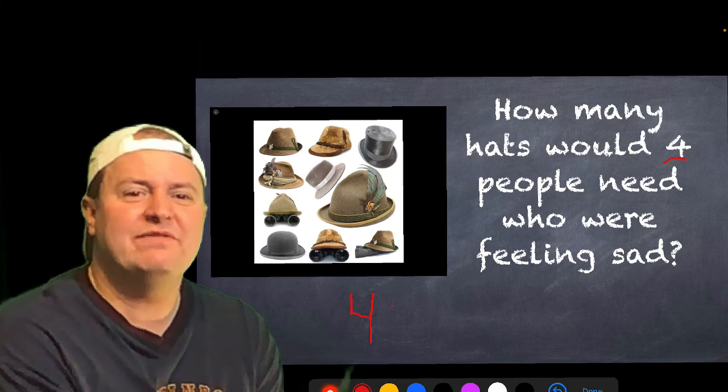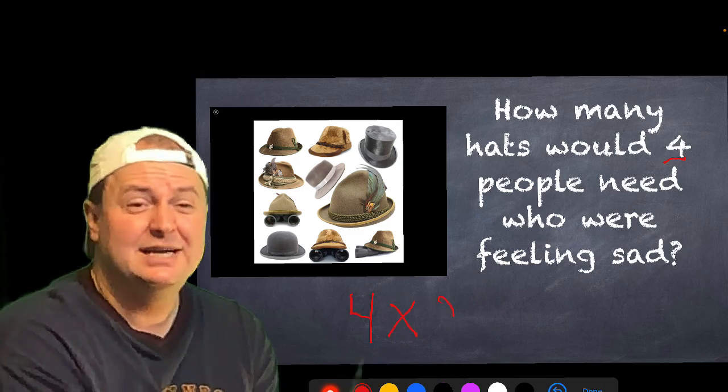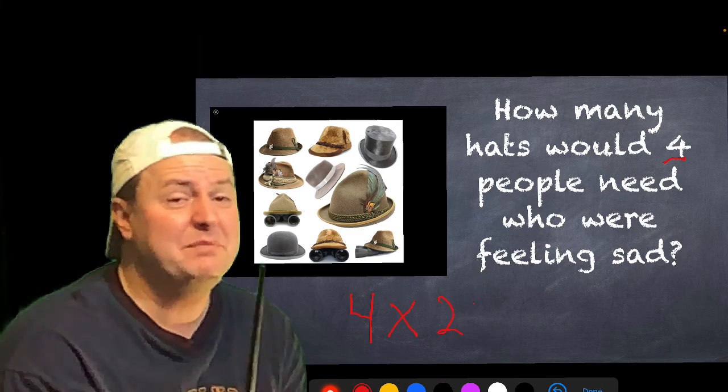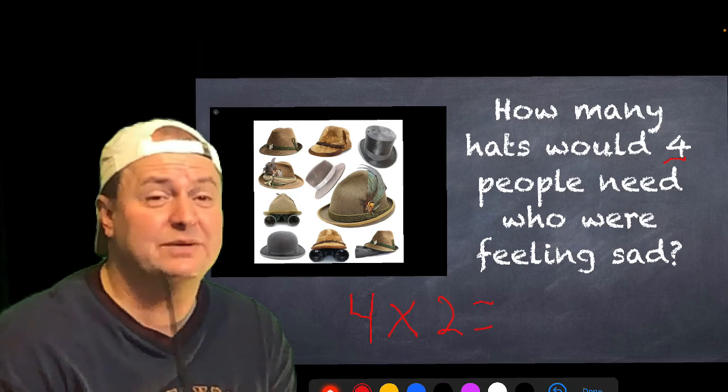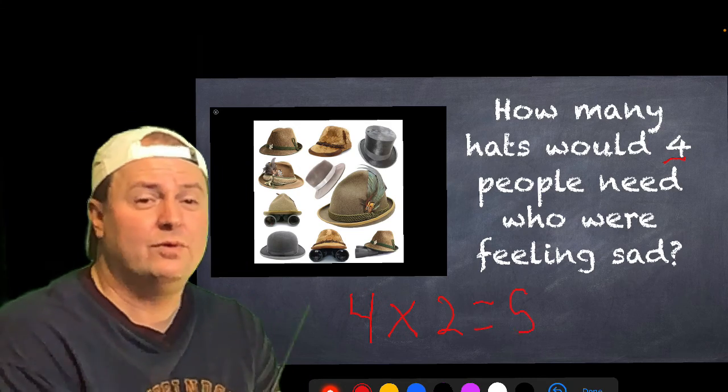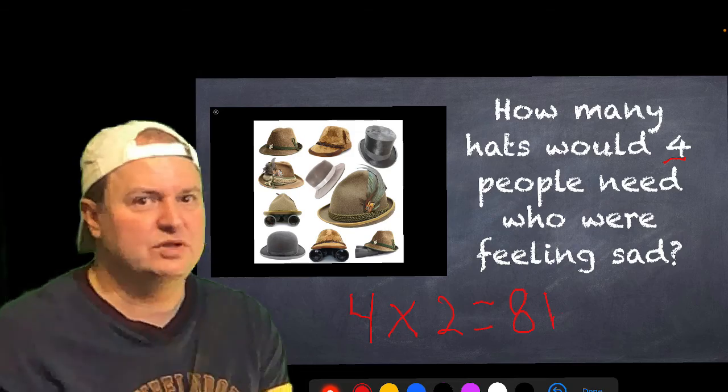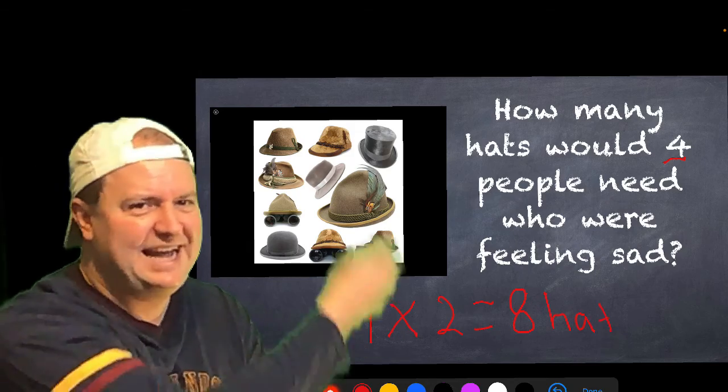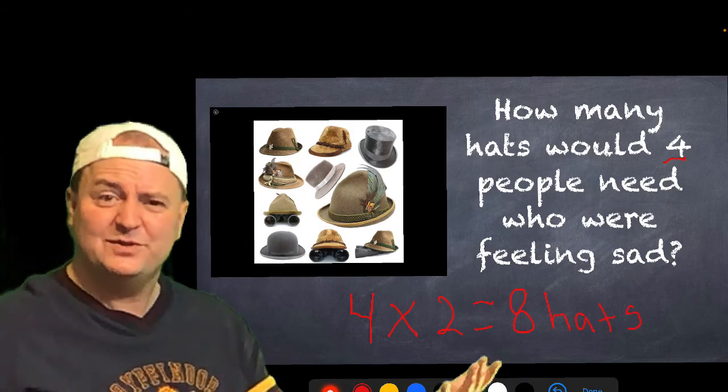All right, so we know we've got four people, right? Four people times the number of hats, and if you remember from the book, they wore two hats when they were sad. So, four times two is eight. Put some clothes on that number. Hats. Four times two is eight, right?